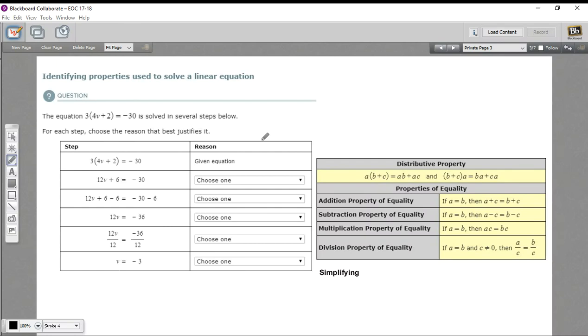In this problem, we're trying to identify the properties that we use when we solve an algebraic equation like this one, where you've got some parentheses, so you have to do some distribution, and then there's usually that step where you add or subtract something from both sides, and then there's usually that last step where you divide by something.